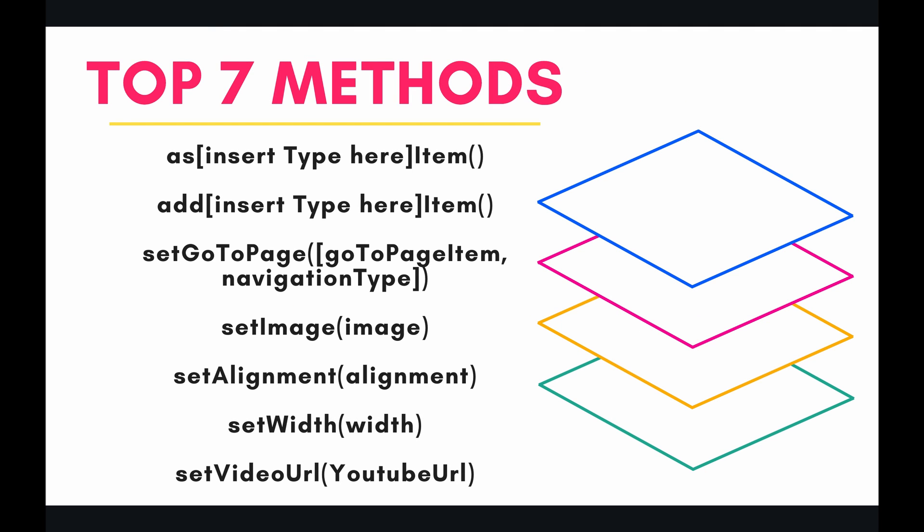The top seven methods I have for you today start with "as [insert type here] item." What that means is, if you wanted to convert your item into a page break, you can say asPageBreakItem. Or if you want to convert it into an image, you can say asImageItem. There are a lot of different types that you can typecast into, and this is the method to do that.